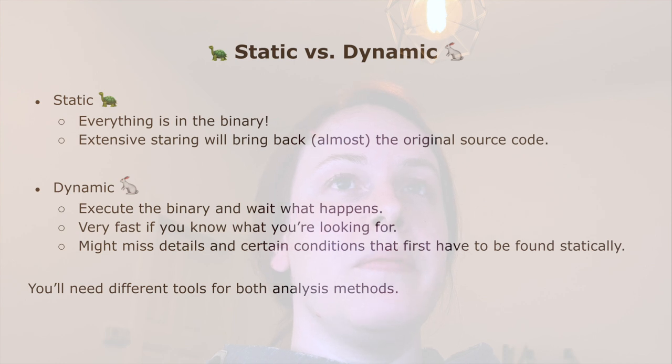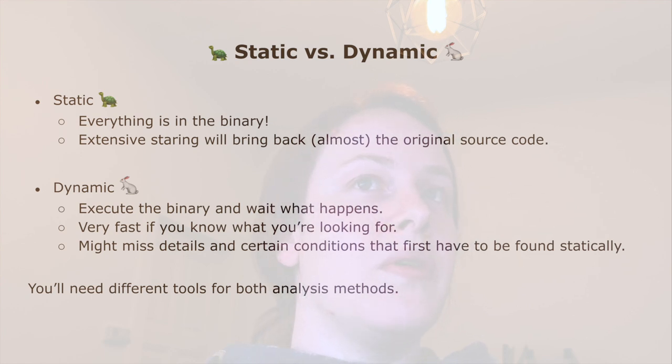Dynamic analysis is faster: you execute the binary and watch what happens. Especially if you know roughly under which conditions something executes, you can run the debugger and see what is happening. However, the issue with dynamic analysis is that not everything is called during a normal program run. For example, a malware might detect it's running in a debugger and not execute certain code under those conditions — you would never see that in the debugger unless you know where those debugger or virtual machine checks are. So depending on what you want to achieve, you will need different tools and will probably use both static and dynamic analysis.